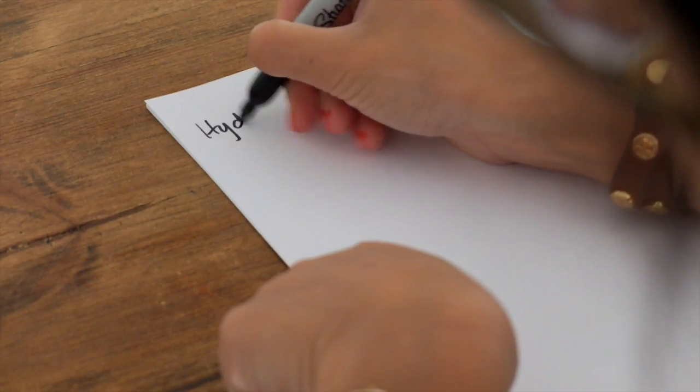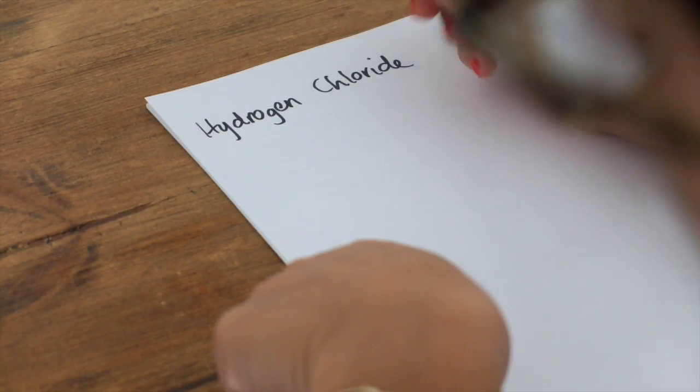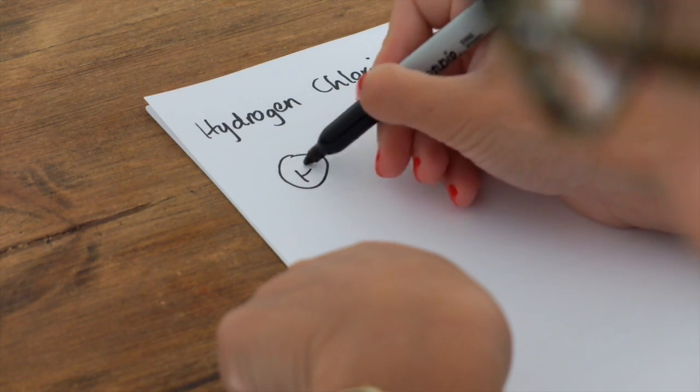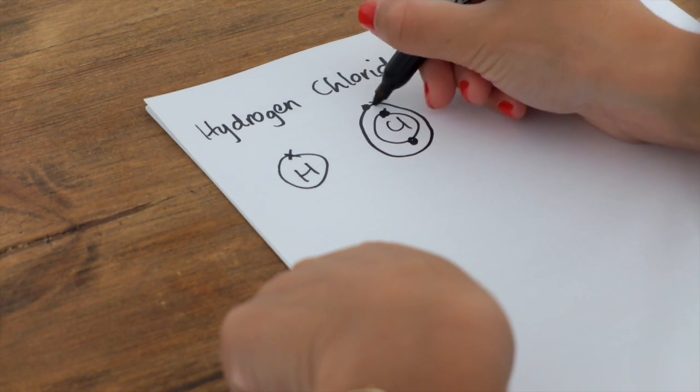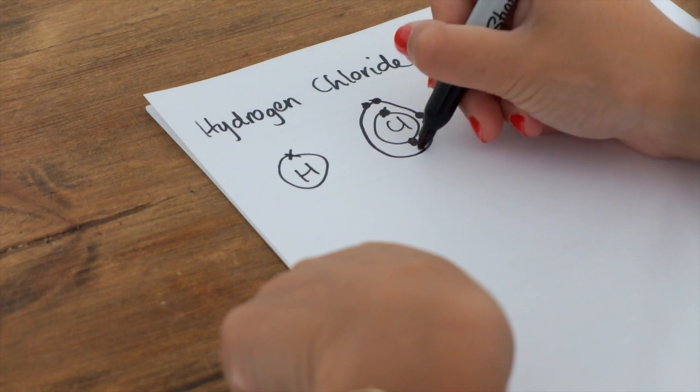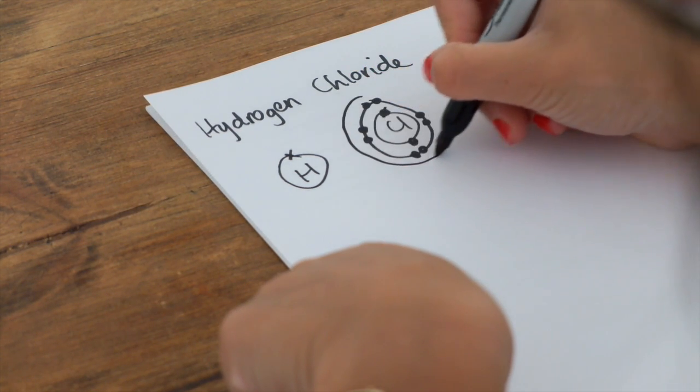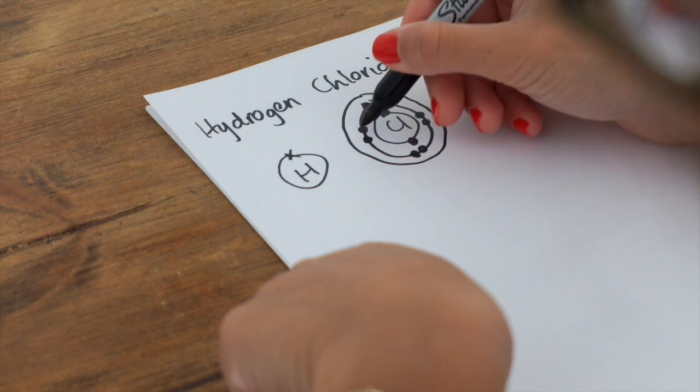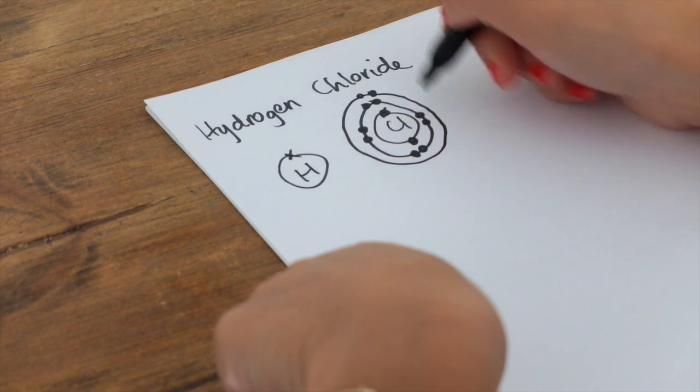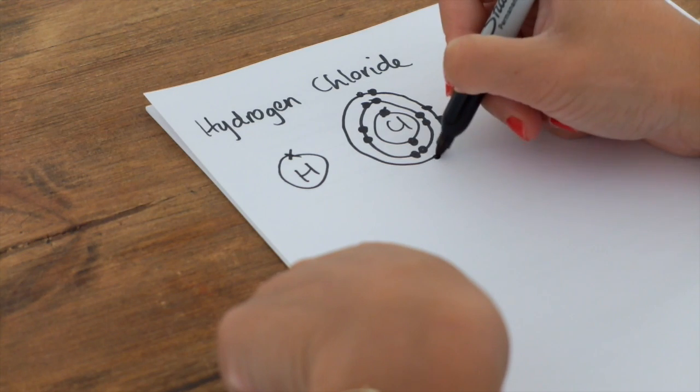So let's look at some examples. I'm going to pick a nice straightforward one. Hydrogen chloride. So same old, draw the electron configuration for each. Now at this point, I just want to point out that you don't actually have to draw all the shells of electrons. You can just choose to draw the final shell, because then it saves you drawing out. Because remember, these middle shells are kind of just fillers.